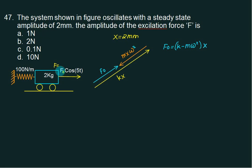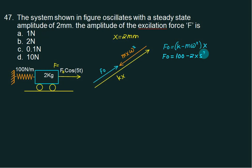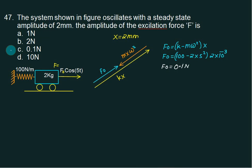From this equation, we don't know F0. We know K. The value of mass is 2. The value of omega is 5. The amplitude is in mm (millimeters). The answer equals 0.1 Newton. The choice is correct.